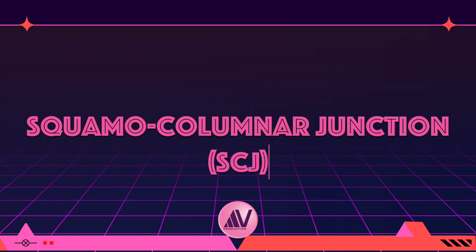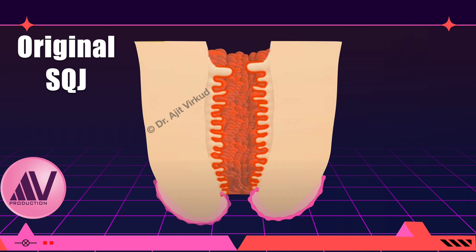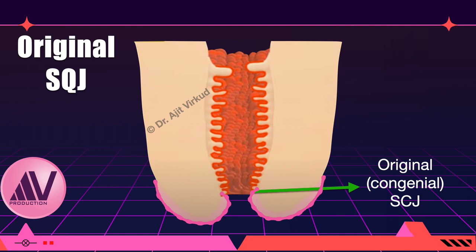Now I will discuss the most important part of this lecture — the squamo-columnar junction. The first thing to keep in mind is that the squamo-columnar junction is dynamic and not static. Age and hormonal status are the most important factors influencing its location. The original squamo-columnar junction present at birth is an abrupt change from columnar epithelium of the endocervix to stratified squamous epithelium of the ectocervix. It is also called the congenital squamo-columnar junction as it was formed during fetal life.